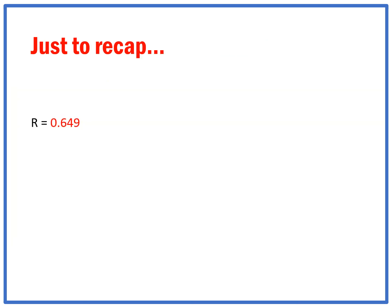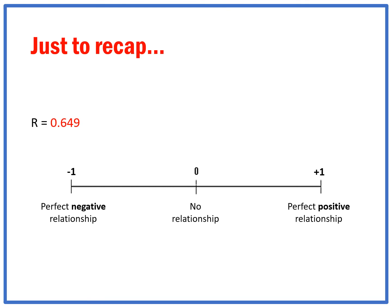Let's recap what I showed you in Excel. My result from doing the Spearman's rank was 0.649. With minus 1 being a perfect negative relationship — as distance from the source increases, the cross-sectional area decreases — all the way up to positive 1, a perfect positive relationship — as distance from the source increases, so does the cross-sectional area — with 0 being no relationship, my value sits about here. So it implies it's leaning towards a perfect positive relationship.